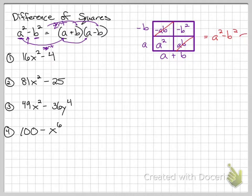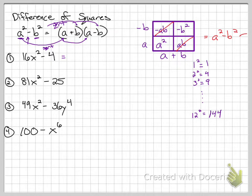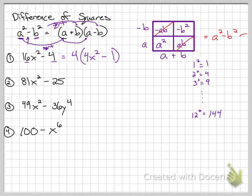You'll want to list out perfect squares if you don't have them memorized: 1² = 1, 2² = 4, 3² = 9, all the way up to 12² = 144. Remember, the first step is always GCF. In number 1, 16 and 4 are both perfect squares but they have a GCF of 4. Factor out 4: 16x² ÷ 4 = 4x², and 4 ÷ 4 = 1, so we have 4(4x² − 1). Now 4x² − 1 is still a difference of squares. The square root of 4x² is 2x, and the square root of 1 is 1, giving 4(2x + 1)(2x − 1).